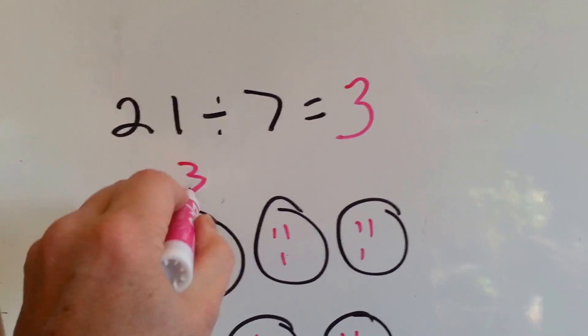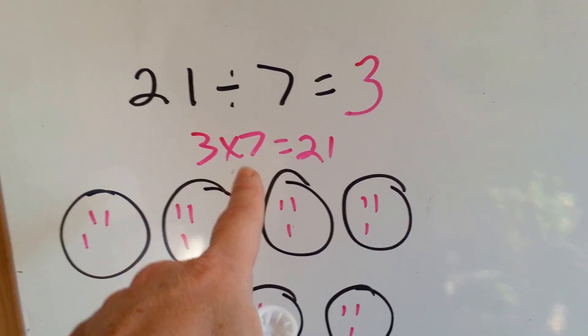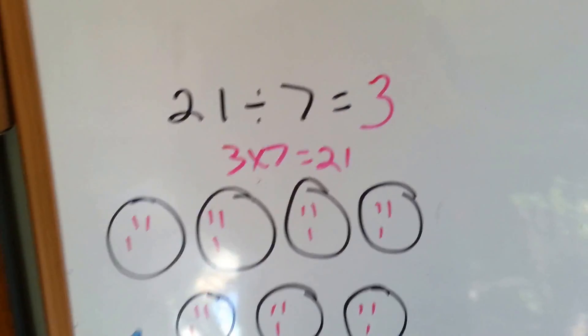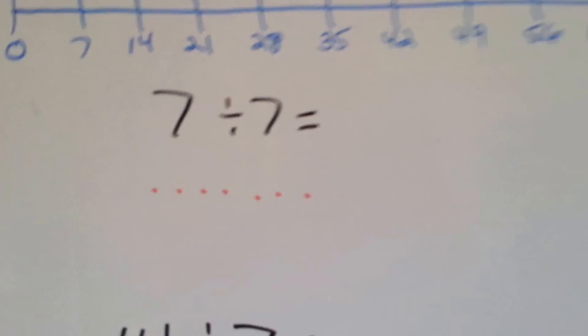aside from having your times table memorized. Because, look, 3 times 7 equals 21. If you knew that, you wouldn't have had to do this bottom part. You would have just known right away because you would have known your times table. Okay, let's look at this one.